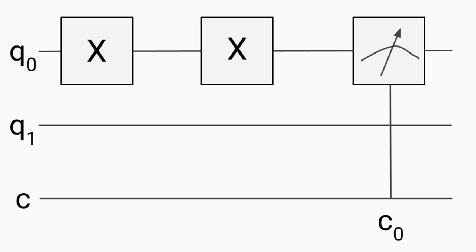It's worth mentioning that all qubits are initialized in state 0. So if you want to start a quantum state in state 1, you have to apply an X gate to the qubit. In this case, we have two X gates being applied to qubit 0, and then qubit 0 is being measured. This means that when qubit 0 is measured, we would get back the 0 state with 100% certainty, and this information is stored on classical bit 0.